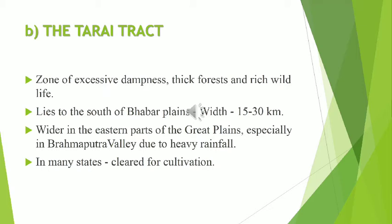The Tarai tract is a zone of excessive dampness — it consists of thick forest and rich wildlife, and is located just to the south of the Bhabar plain. The width of this belt is 15 to 30 kilometers, and the Tarai is wider in the eastern parts of the great plains, especially in the Brahmaputra Valley due to heavy rainfall. Most of the Himalayan forests are located in this region. In many states nowadays, the Tarai forests have been cleared for cultivation because the soil is fertile and rich in water.